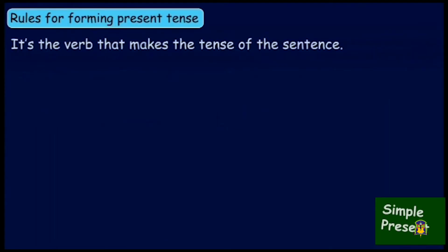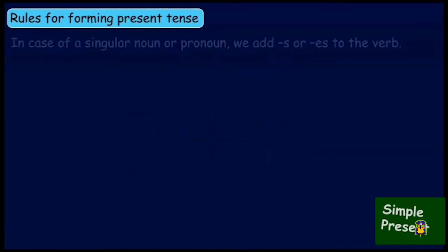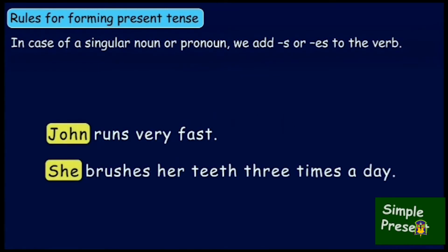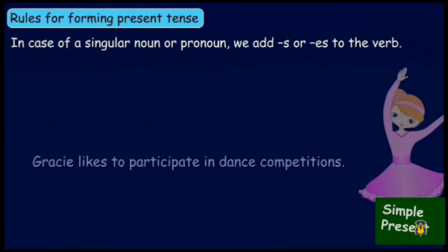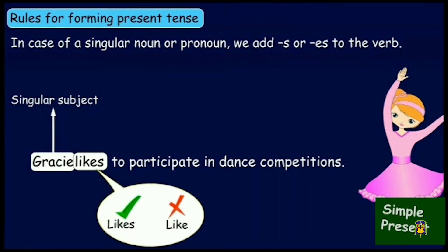Now let's learn some rules for forming the present tense. It's the verb that makes the tense of the sentence. If we are making simple present tense and the noun or pronoun in the sentence is singular, then we add S or ES to the verb. For example, 'Gracie likes to participate in dance competition.' Here, the subject is Gracie and the verb is 'likes.' The subject is a singular naming word, so we have used 'likes' and not 'like.'